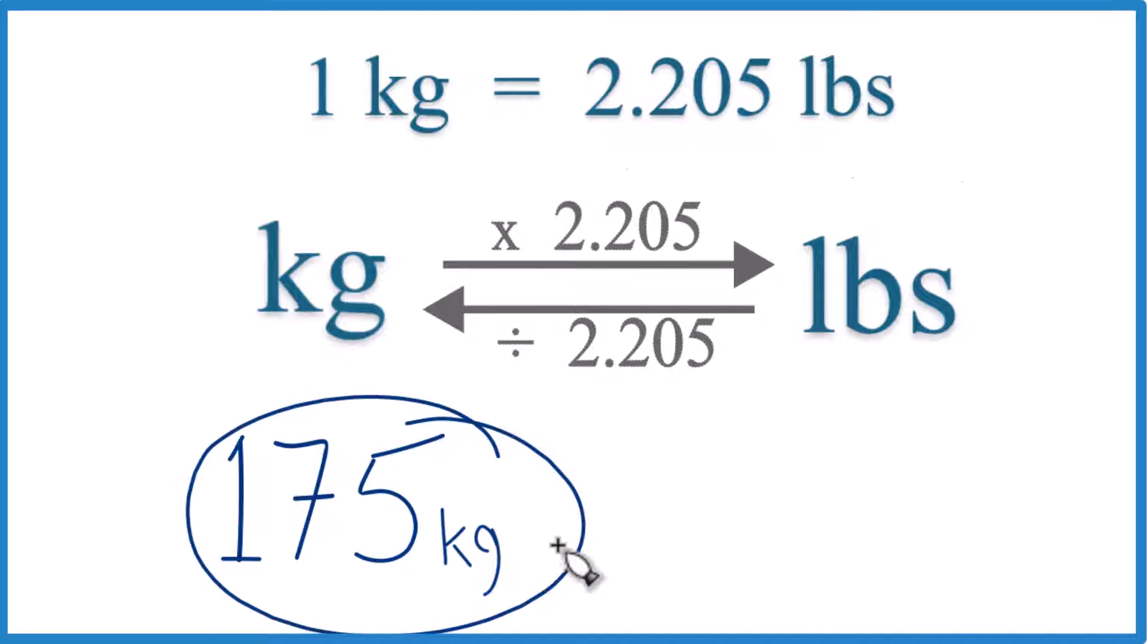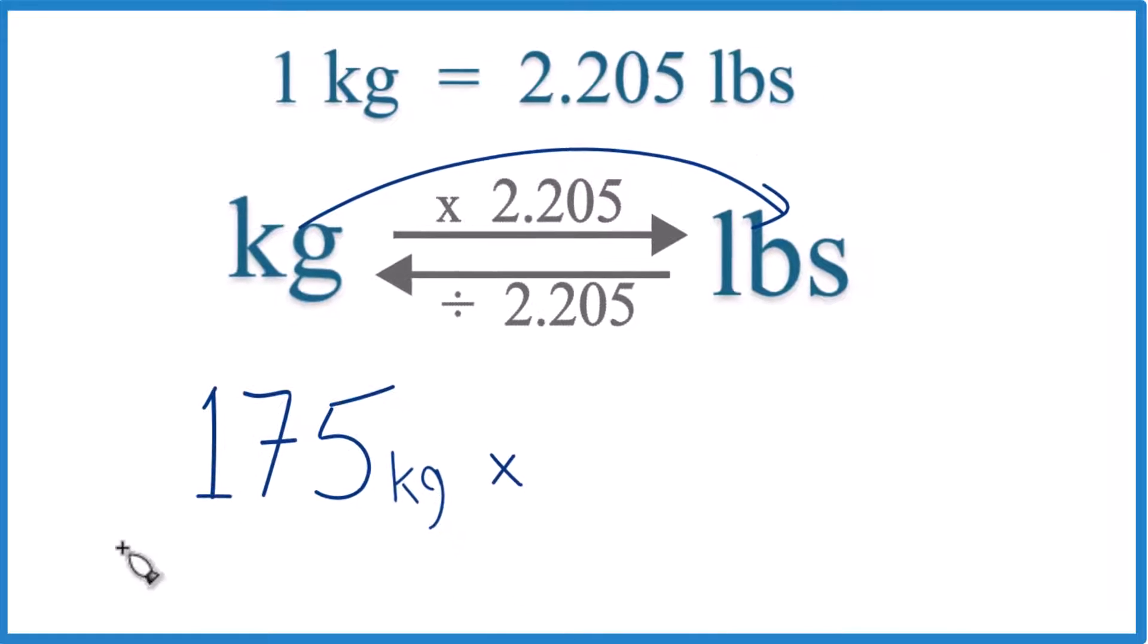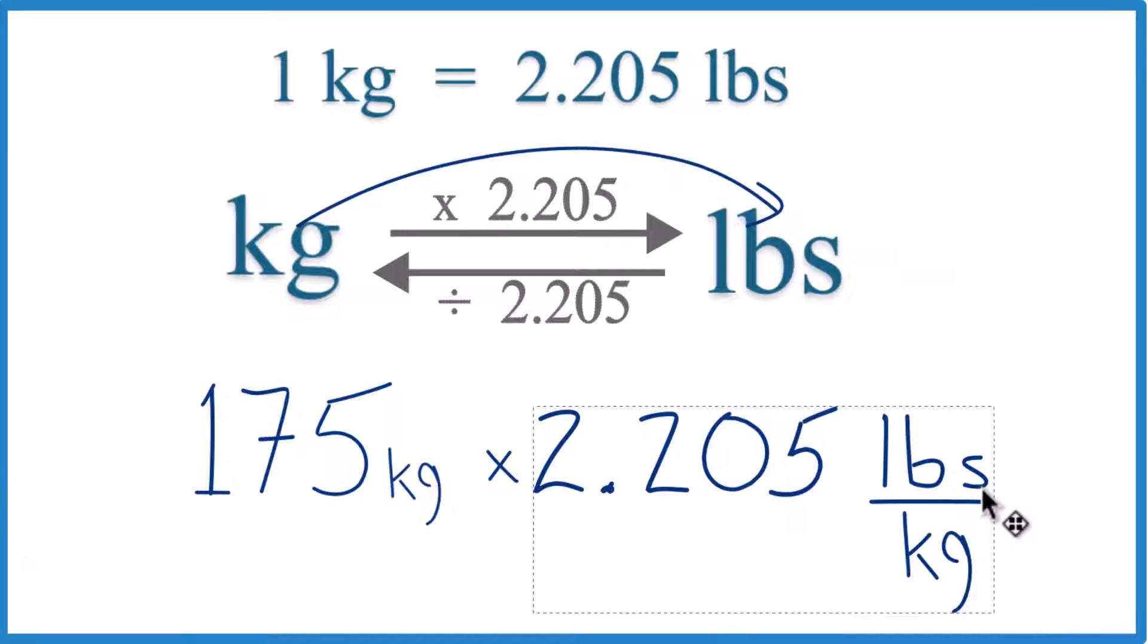So we have 175 kilograms here, and we want to go to pounds. So kilograms to pounds, we're going to multiply by 2.205, like this here.